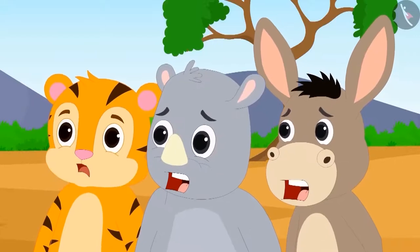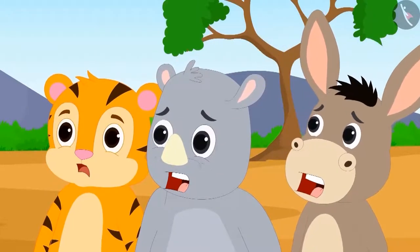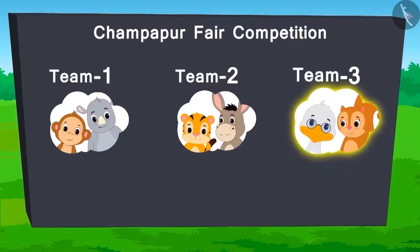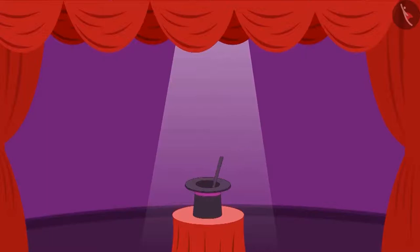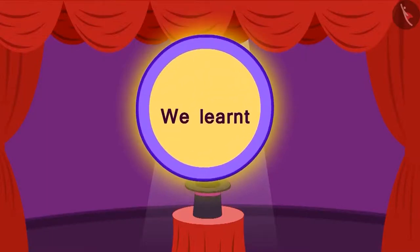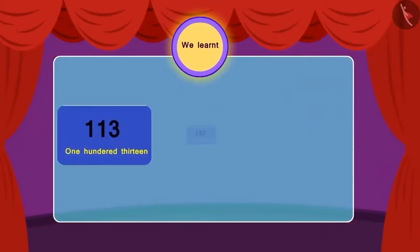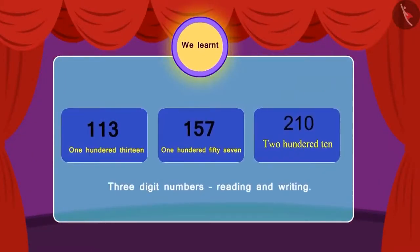Everyone wondered how Chanda did it. In this way, team 3 has won the ticket of this game. There are more games still remaining — we will see what happens in the following video. But before that, we recap what we learnt. Children, in this lesson, we learnt how to read and write three digit numbers.